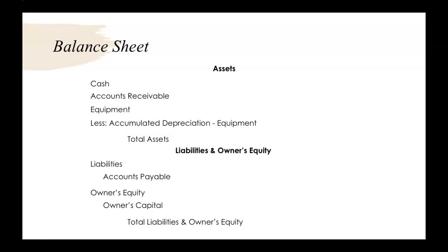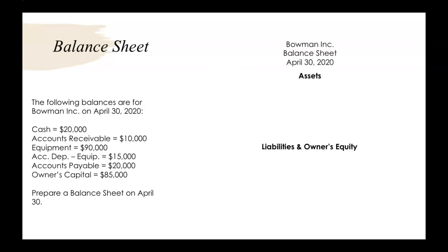Once you find that, then you move on to the next part of the balance sheet: your liabilities and owner's equity. We will list out our liabilities, then list out our owner's capital under the owner's equity umbrella, and we total up our liabilities and owner's equity. Our total assets need to equal our total liabilities and owner's equity, because if we think back to the accounting equation, that says assets equals liabilities plus owner's equity. So now we're just proving that in a financial statement.